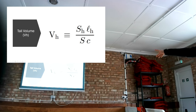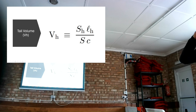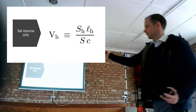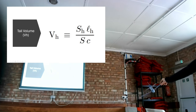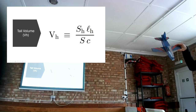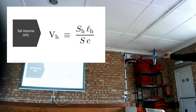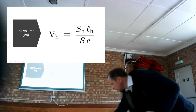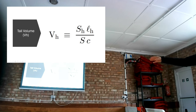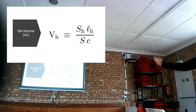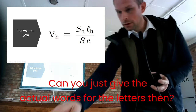In the tail volume formula, SH is the horizontal tail area and LH is the horizontal tail moment arm. You can achieve the same tail volume with a short moment arm and a big tail, or a long moment arm and a small tail. At the bottom of the equation are the destabilising factors — bigger wing area and bigger chord — and on the top are the stabilising factors: bigger tail area and longer tail moment.